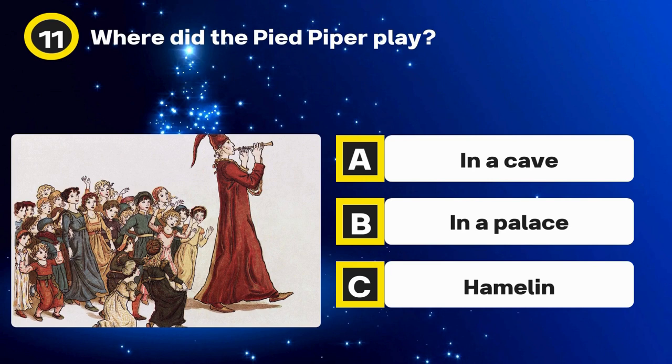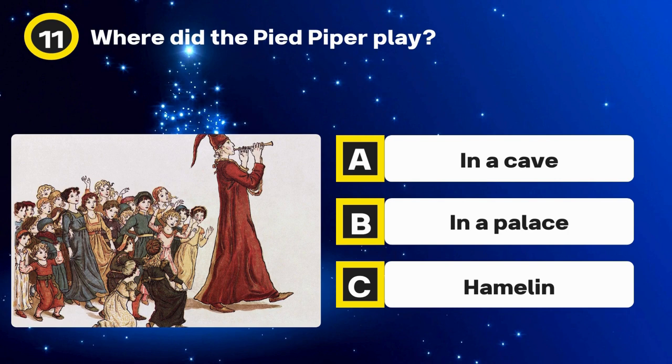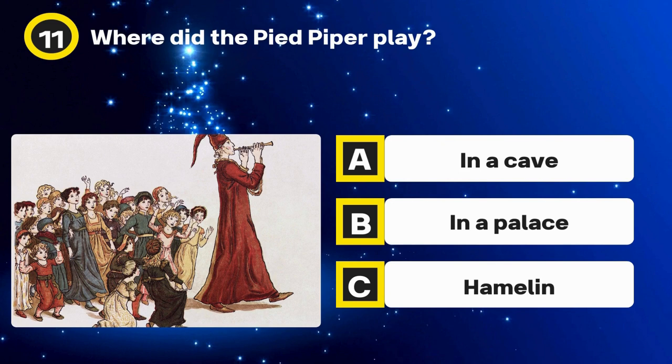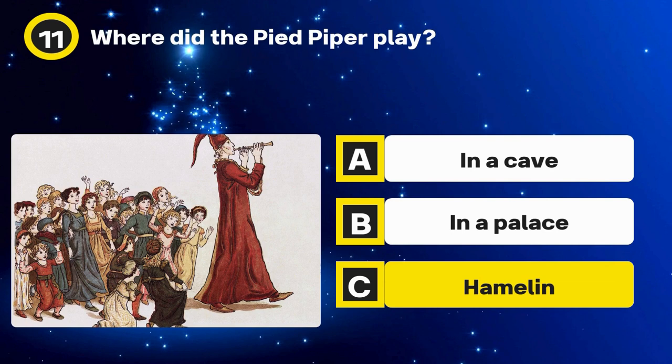Question 11. Where did the Pied Piper play? Options: In a cave, In a palace, Hamelin. The answer: Hamelin.